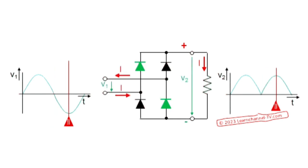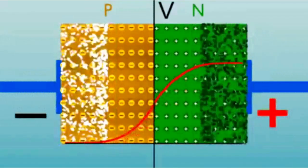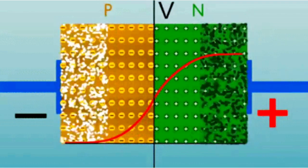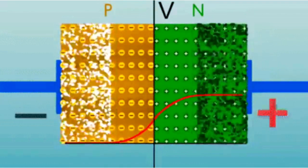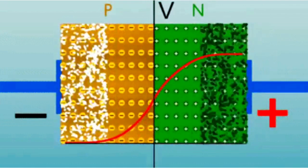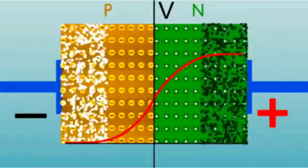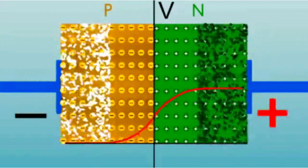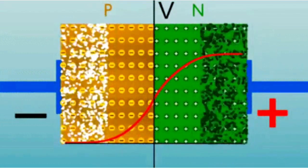In reverse bias, the diode exhibits very high resistance, effectively blocking current flow in the reverse direction. The reverse current is primarily due to minority carriers - minority carrier diffusion and thermally generated carriers - recombination crossing the junction, leading to a small leakage current.